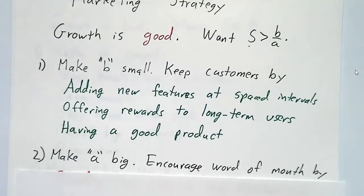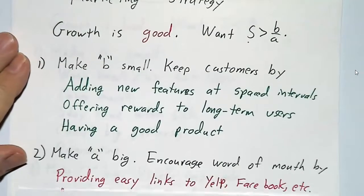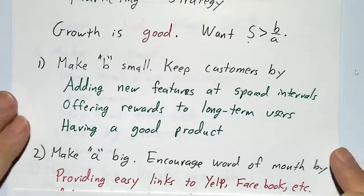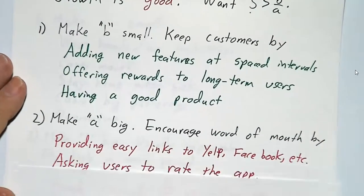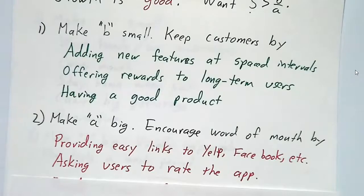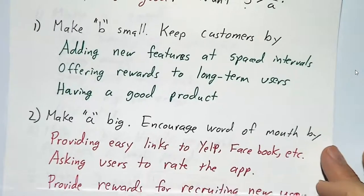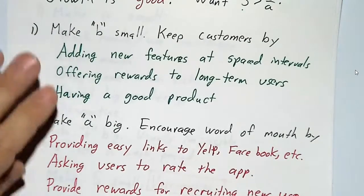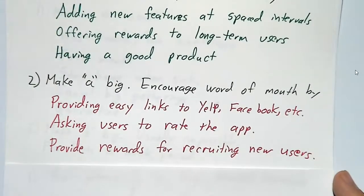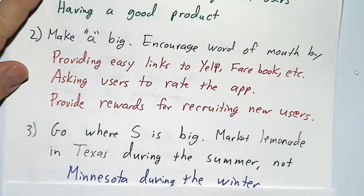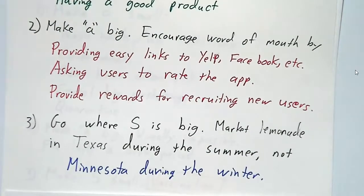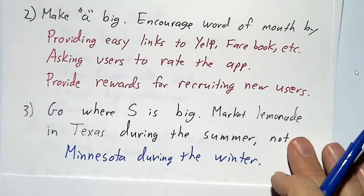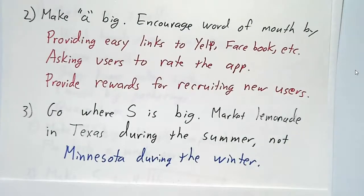You also want to make a big — you want to encourage word of mouth. Maybe you provide an easy link to Yelp or Facebook on your app, or send emails asking your users to rate the app, or provide rewards for people who recruit new users. Those are all tricks to get the transmission to go up. Finally, you want to go where S is big to begin with. No matter where the bar is, you want to be above it. So if you're selling lemonade, go to Texas in the summer — don't go to Minnesota in the winter.